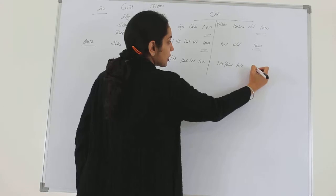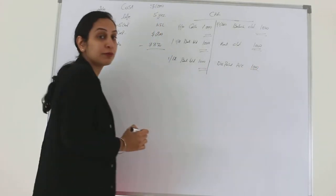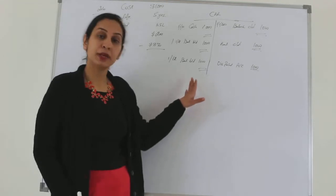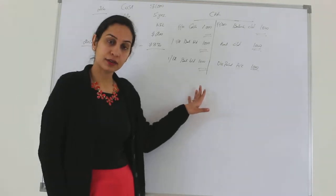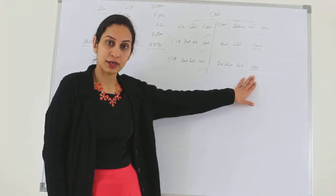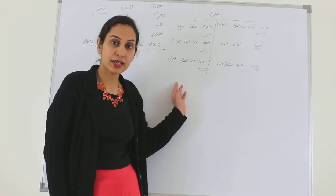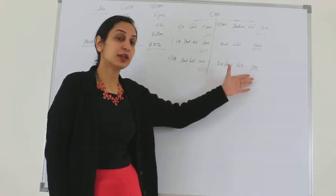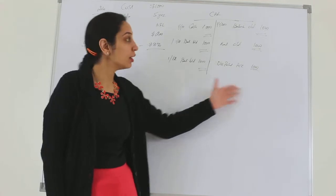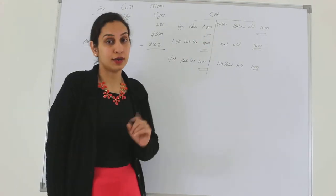So we will transfer this balance to an account which is called the disposal account. This disposal account will end the life of my asset. Because we are selling the complete car, we are transferring the complete amount to disposal. Had it been a partial sale, we could have transferred only the partial amount to the disposal account. This is how we make the ledger for car.